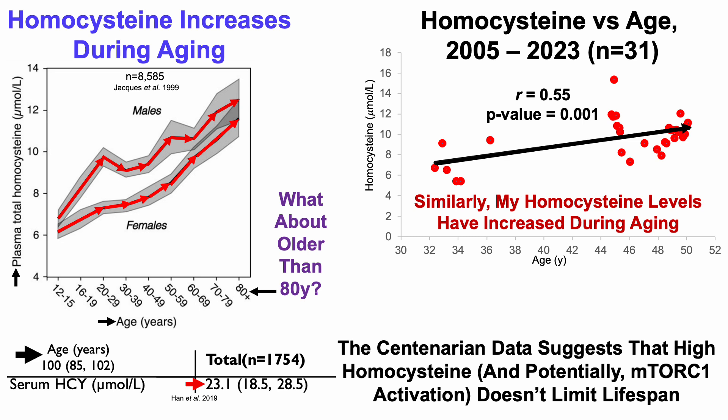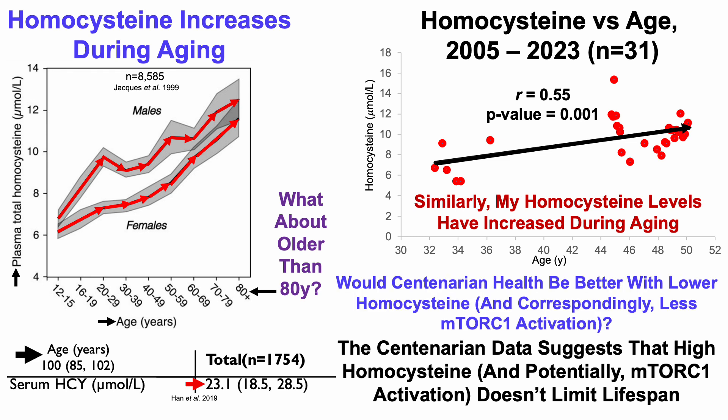Now, the centenarian data actually argues against the role of homocysteine on longevity. In other words, it suggests that high homocysteine and potentially mTORC1 activation doesn't limit lifespan. But when considering that mTORC1 is associated with a whole bunch of adverse health-related conditions, would centenarian health be better with lower homocysteine and correspondingly less mTORC1 activation?